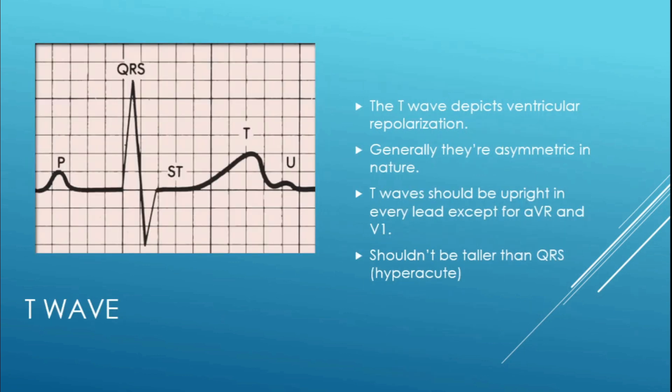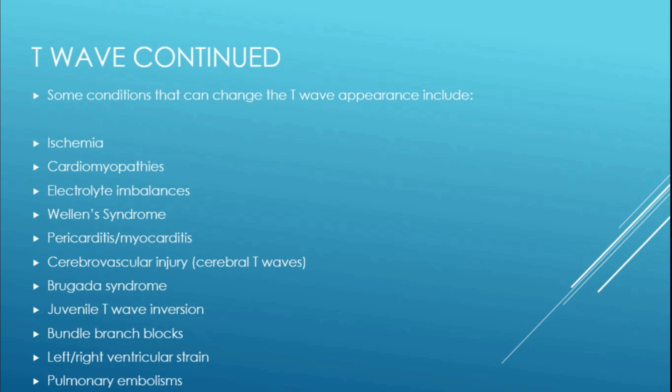The T wave depicts ventricular repolarization. Its size varies based on age, sex, and lead placement. Generally T waves are asymmetric in nature. The T wave should be upright in every lead except AVR and V1, where it's allowed to be inverted. When the T wave starts becoming more symmetrical, start thinking hyperacute changes — such as ischemia — which can be an early sign of a STEMI. Other T wave changes include Brugada pattern, cerebral T waves, and bundle branch blocks.